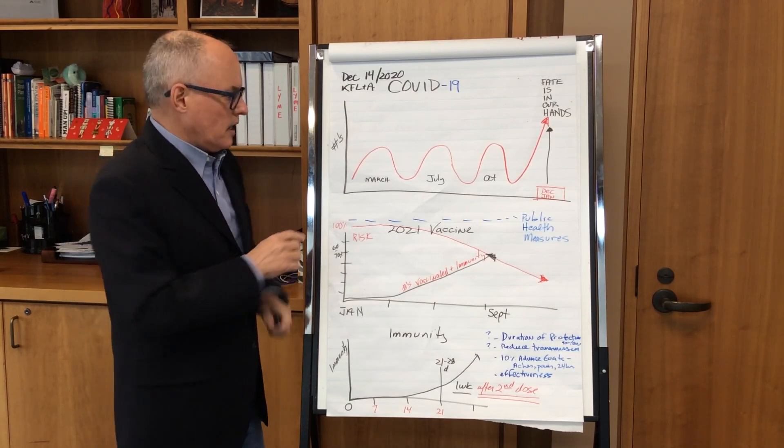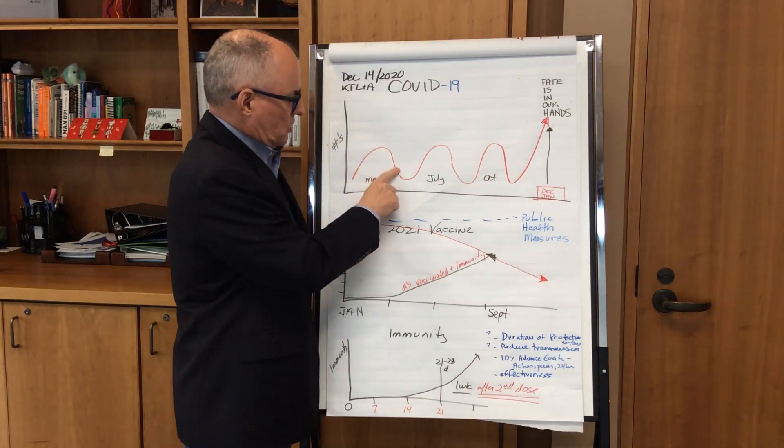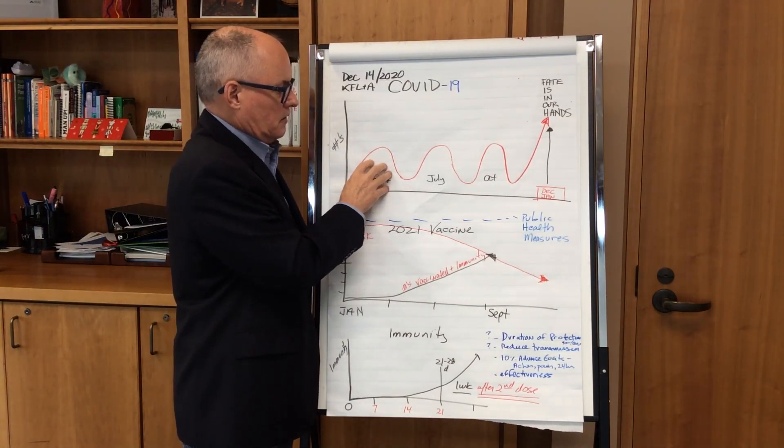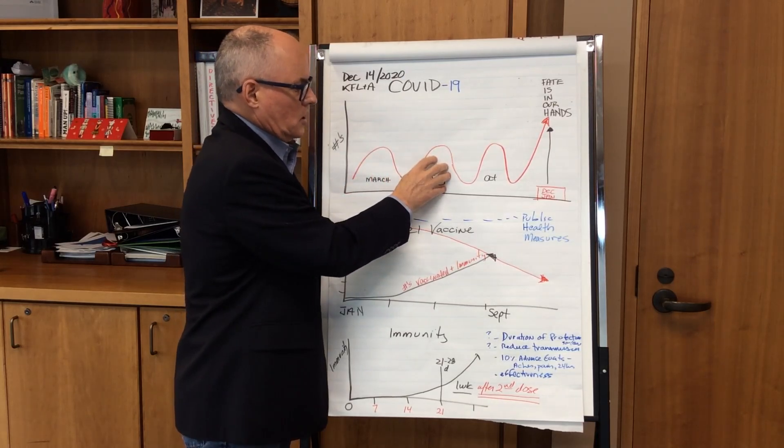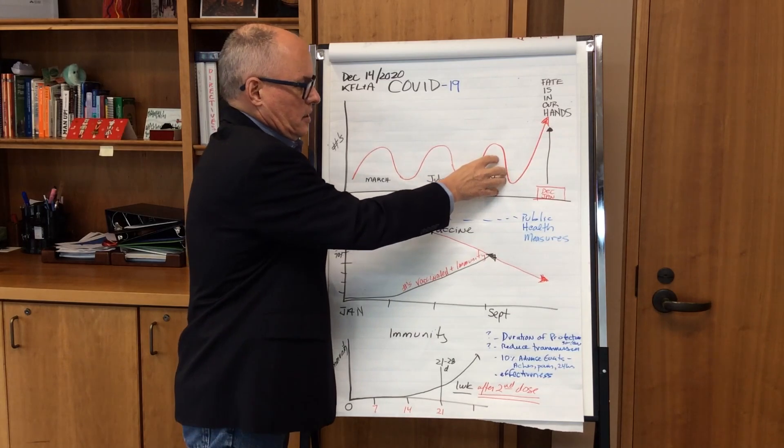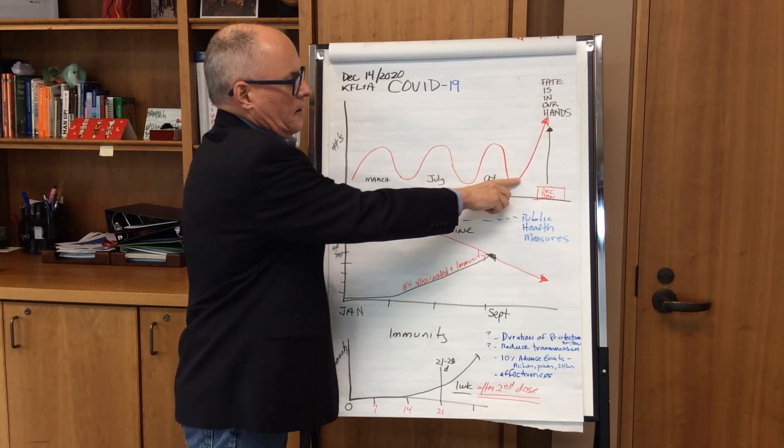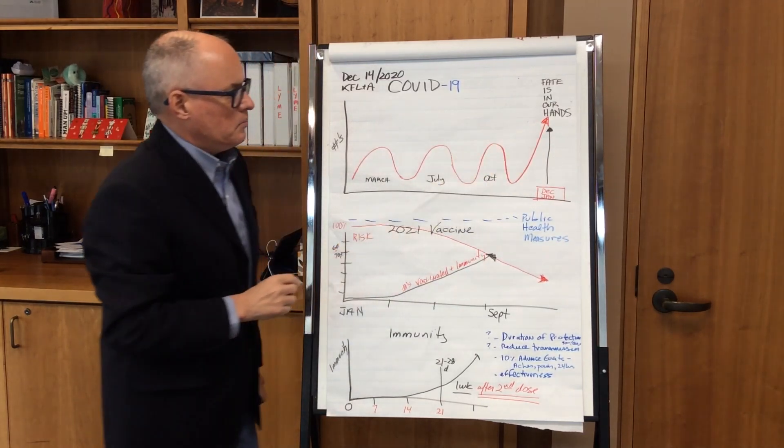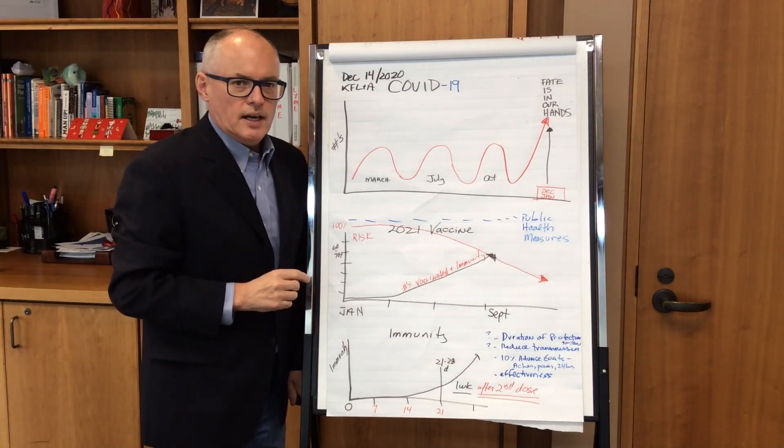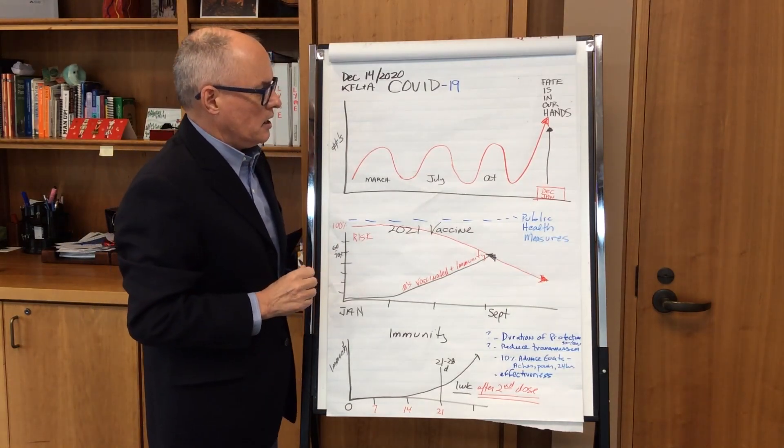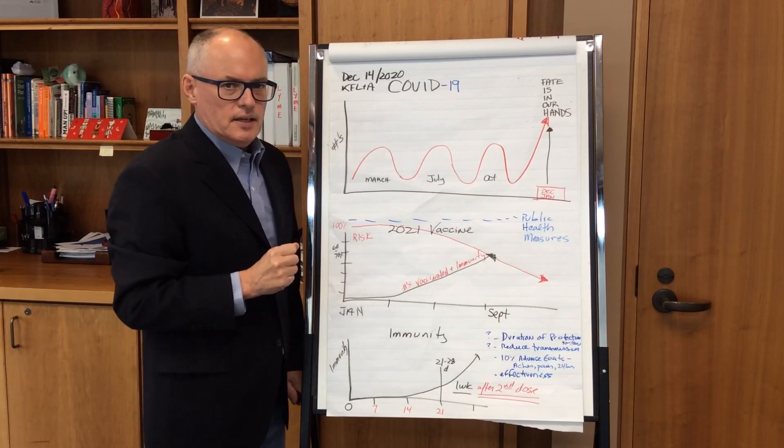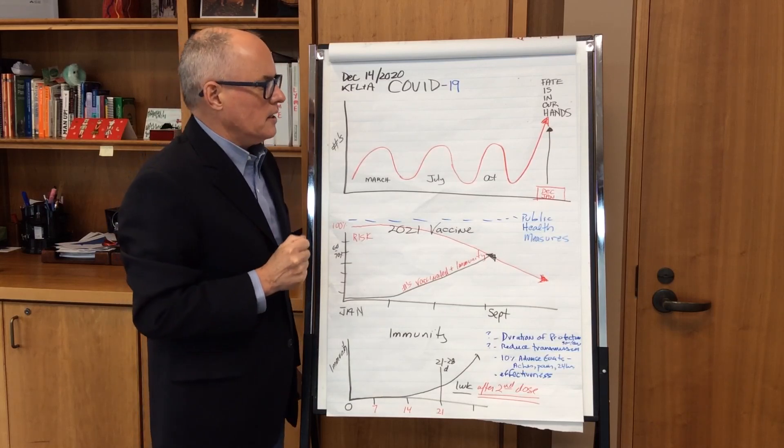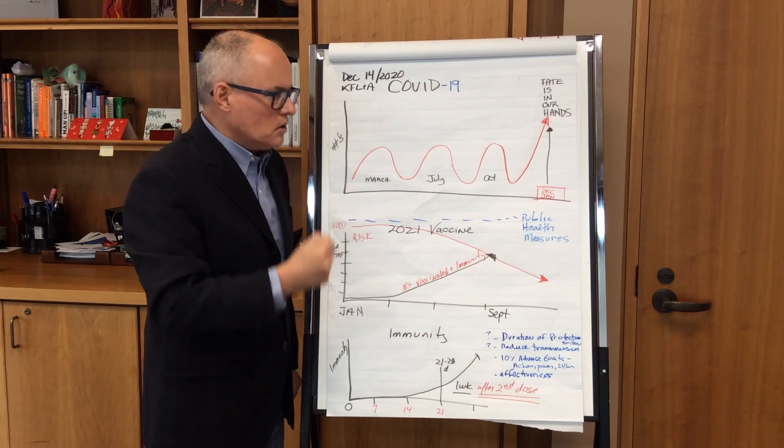As a community in KFLA, we've been able to control the initial surge in March of 2020 as well as in July. We had a slight rise in the beginning of the school year in October, and now heading into December we're going to a very high risk time in our community. It's really up to us as a community to try to limit the spread and not have ongoing outbreaks.